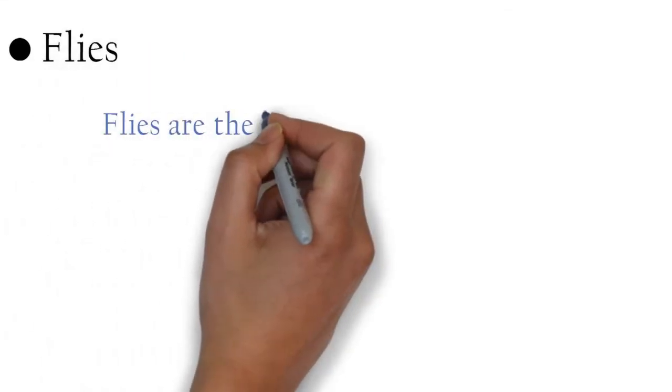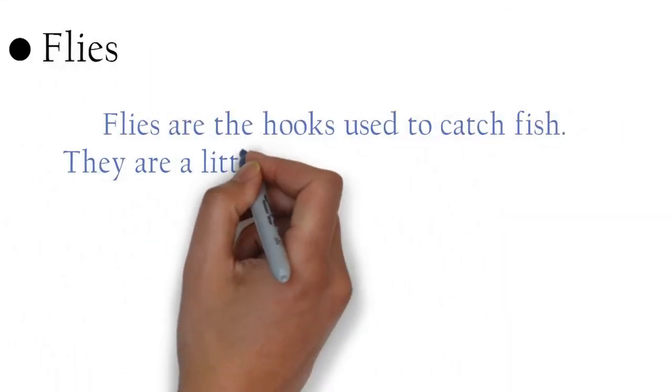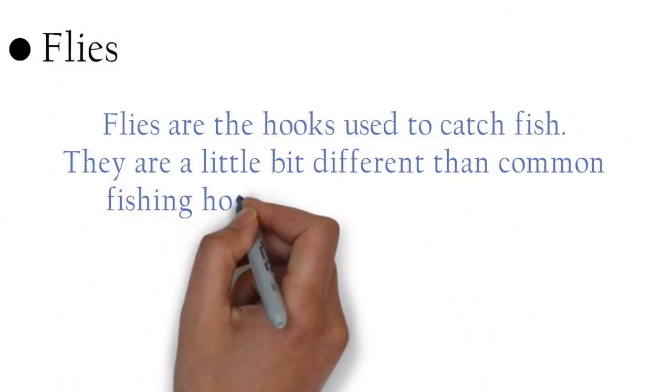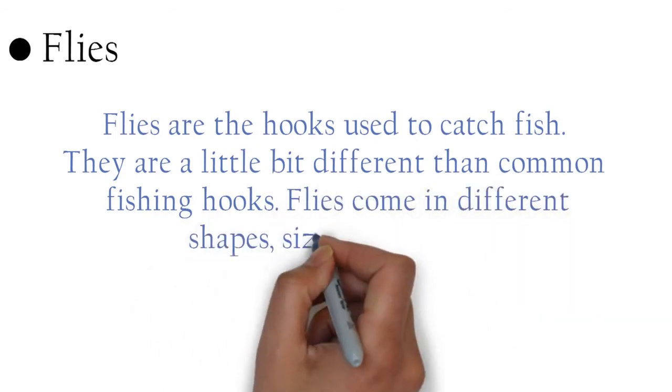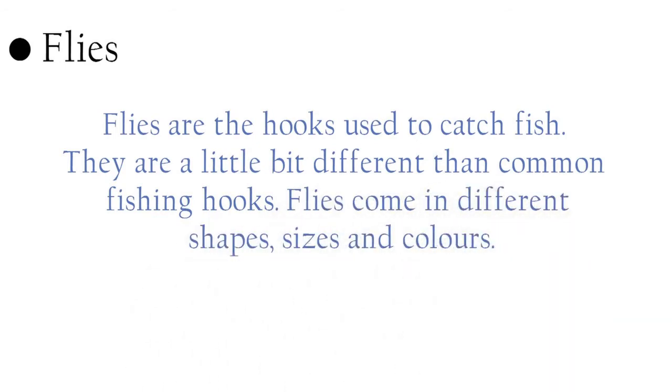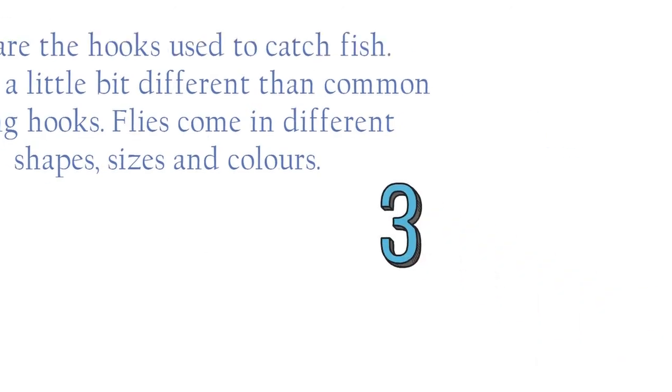Flies are the hooks used to catch fish. They are a little bit different than common fishing hooks. Flies come in different shapes, sizes, and colors. They are made to look like different types of food that fish like to eat. They come in three types.